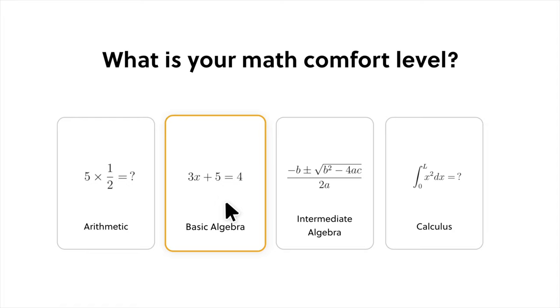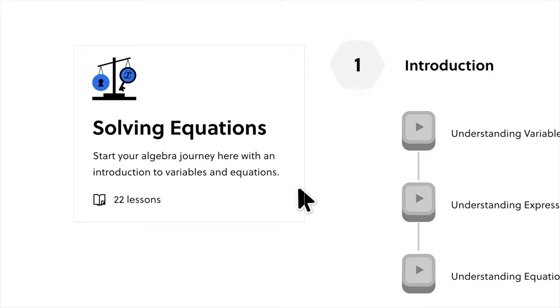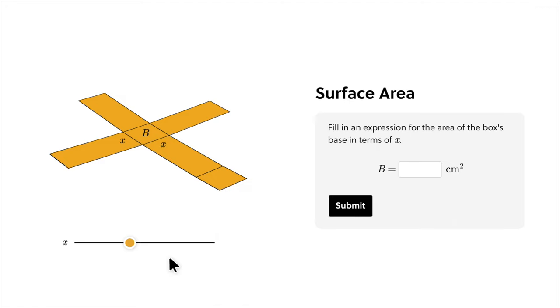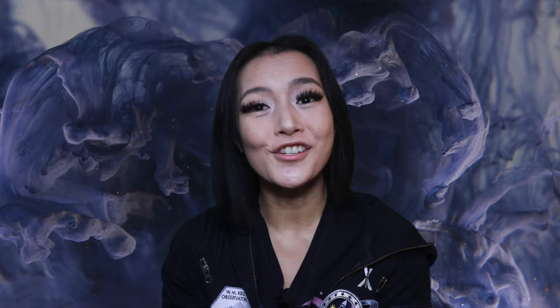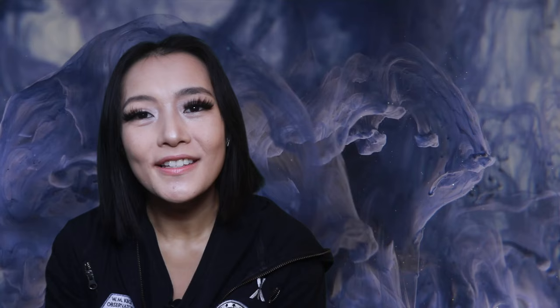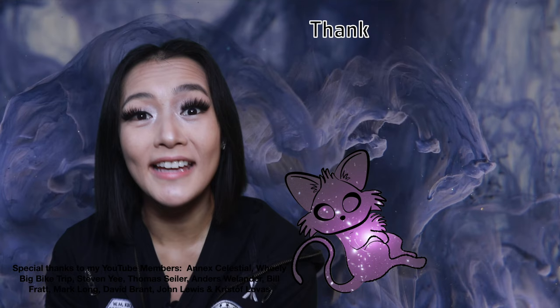Thank you to my YouTube Perks members who supported today's episode, and a big shout out to Brilliant.org for sponsoring today's video. Brilliant is a platform that helps demystify complex topics like math, data science, and computer science. If you've ever been haunted by a challenging concept or a puzzling equation, Brilliant offers interactive courses and quizzes to make learning fun. Check out their courses on quantum objects, gravitational physics, or quantum mechanics with Sabine Hossenfelder. Head over to Brilliant.org/spacemog — with my special link you can get a free trial and 20% discount on the premium subscription for the first 200 to sign up.